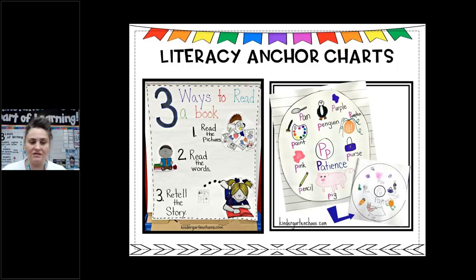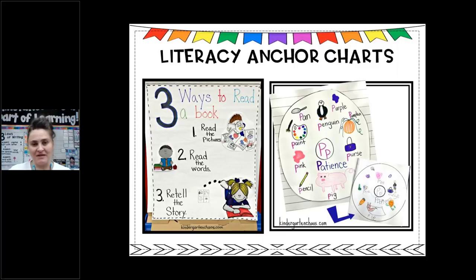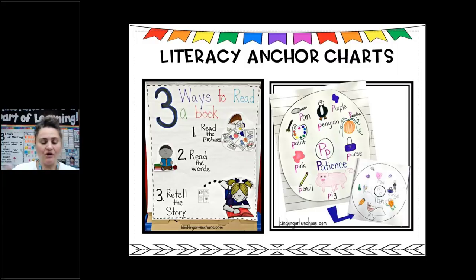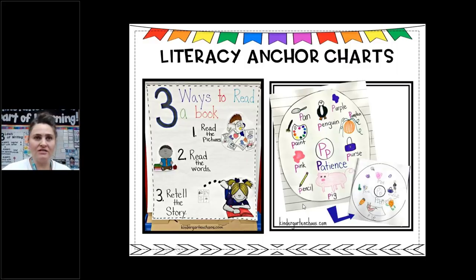Here are some literacy anchor charts. 'Three ways to read a book': reading the pictures, reading the words, retelling the story. This is another anchor chart I don't do in one day. I might do a mini lesson on reading the pictures, put that on the chart, then a couple of weeks later do reading the words — by then we have a handful of sight words and are learning to point and read. Then when I do a retelling lesson, we add that component. This anchor chart goes in the library.